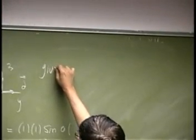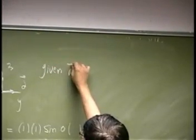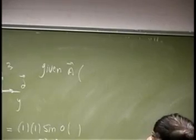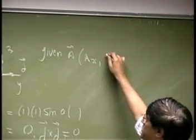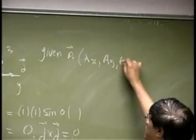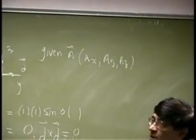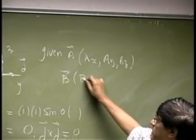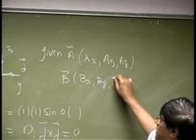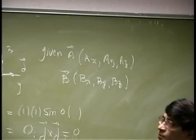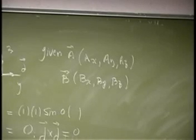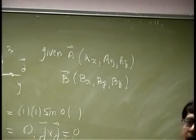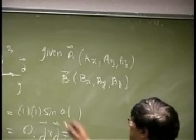Now suppose you are given a vector A as Cartesian vector form, which means you have Ax, Ay, and Az. Then you are given vector B, so it has components Bx, By, and Bz. So when we say that we are given A as well as B, we are really given the components Ax, Ay, and Az, and the components Bx, By, and Bz. Then I want to do A cross B.